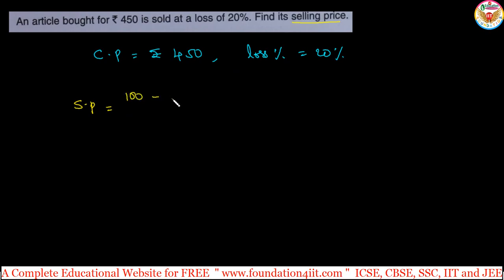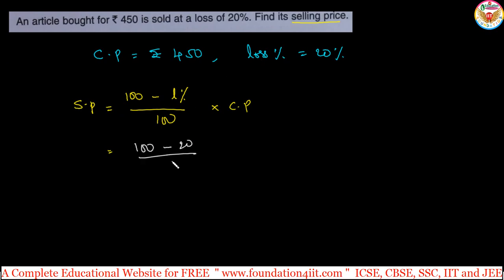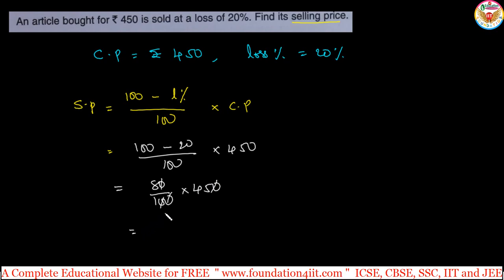Remember the formula: selling price = (100 − loss percentage) / 100 × CP. If it is gain, use plus; if it is loss, use minus. Here, loss percentage is 20 and cost price is 450. So selling price = (100 − 20) / 100 × 450 = 80 / 100 × 450. Cancelling the zeros, we calculate 8 × 45.